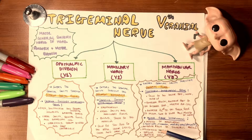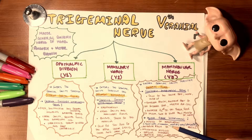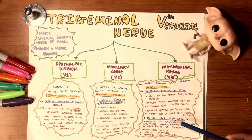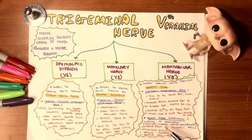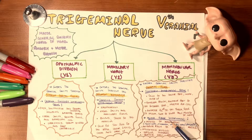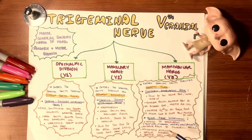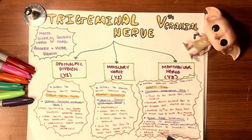The motor innervations of the mandibular nerve supply the muscles of mastication — all four of them: temporalis, masseter, medial and lateral pterygoid. These will be covered in the next lesson, so stay tuned. Additional motor innervations include the anterior belly of the digastric muscle, mylohyoid muscle, tensor veli palatini, and tensor tympani. These last two muscles are separated from the facial nerve but supplied by the mandibular nerve.